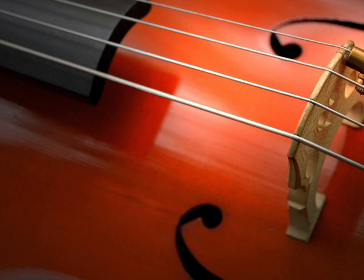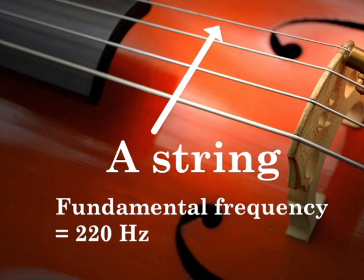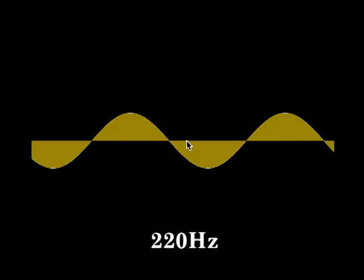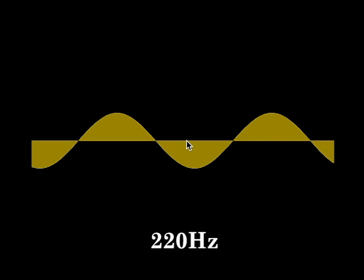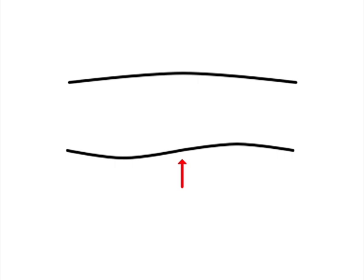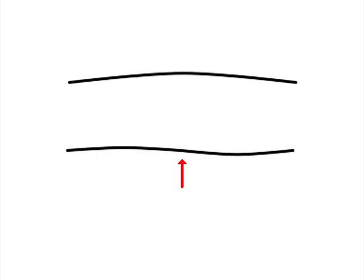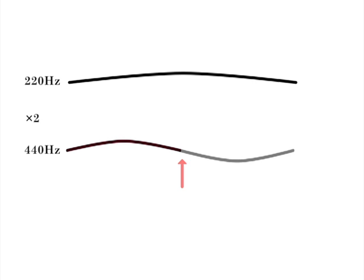For example, let's consider the A string of a cello. The fundamental frequency, the one that we perceive as its pitch, is 220 Hz. We call this the first harmonic in the harmonic series for the note called A. The second harmonic is the one produced by dividing a vibrating thing in half. This produces a sound one octave above the fundamental. To calculate its frequency, we multiply 220 by 2, which equals 440.